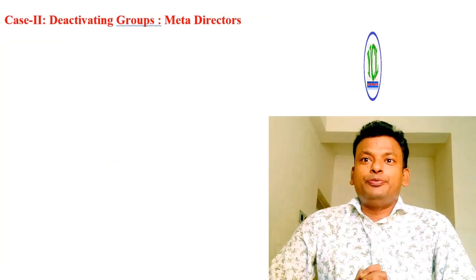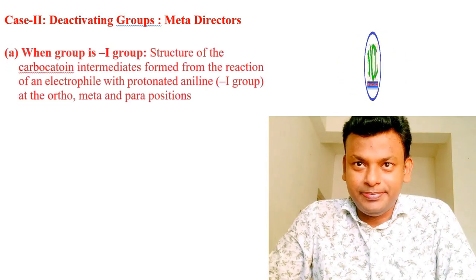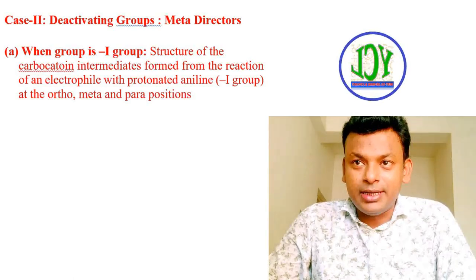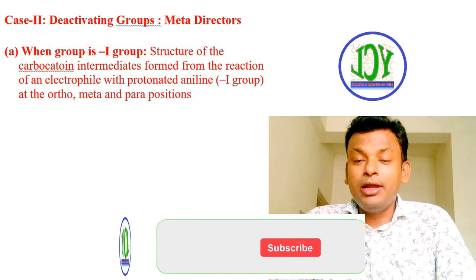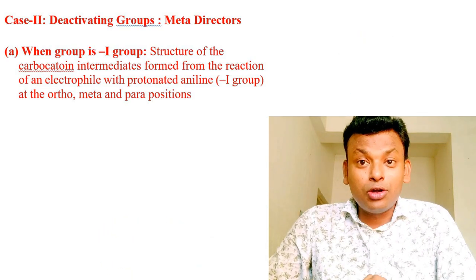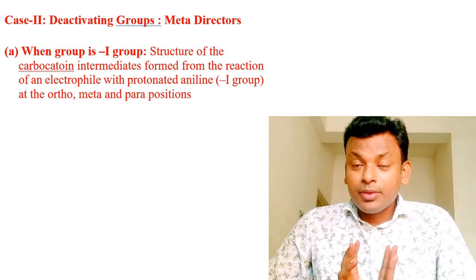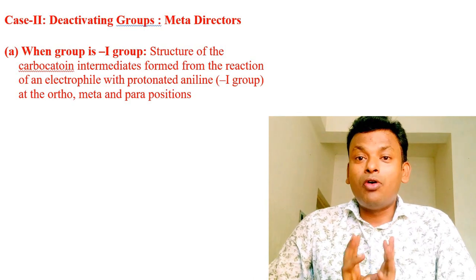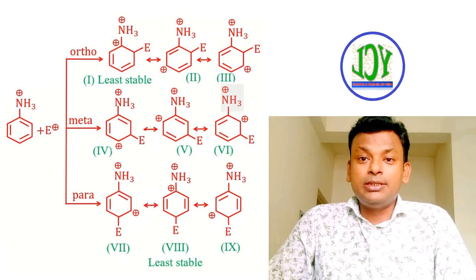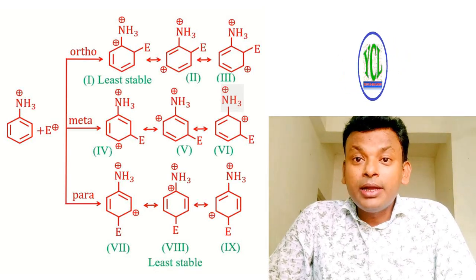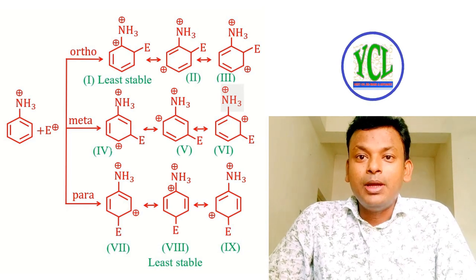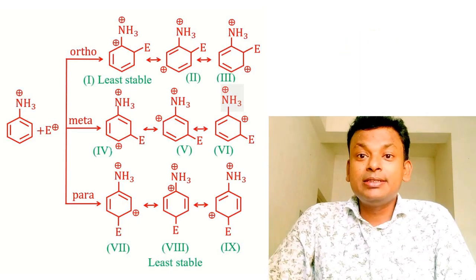Case 2: deactivating group, meta-directing. When the group is a −I group — for example, protonated aniline (NH₃⁺) — the carbocation intermediate at ortho and para positions is least stable, while the meta position intermediate is more stable. Therefore, electrophilic attack at ortho and para positions is least favorable, and the meta product is formed for −I effect groups such as protonated aniline (NH₃⁺).